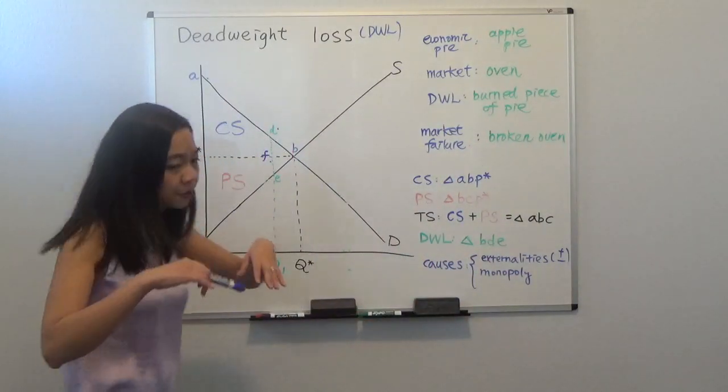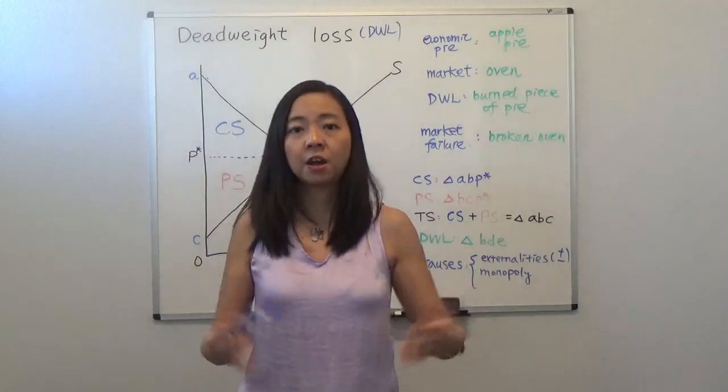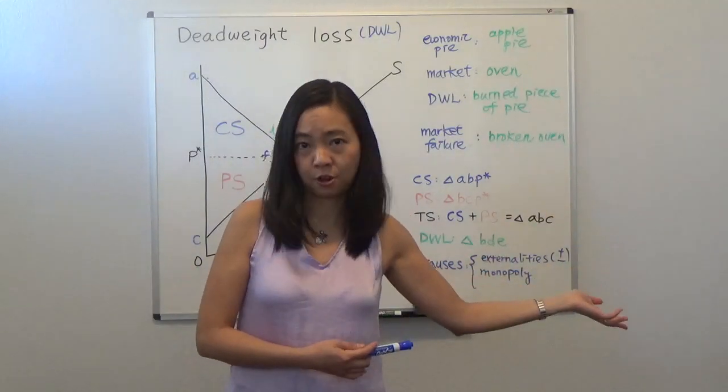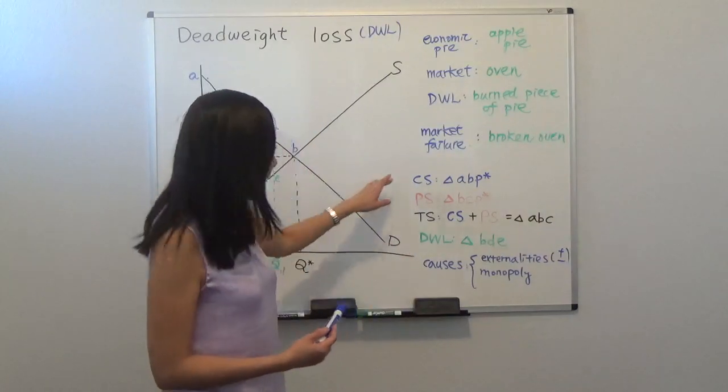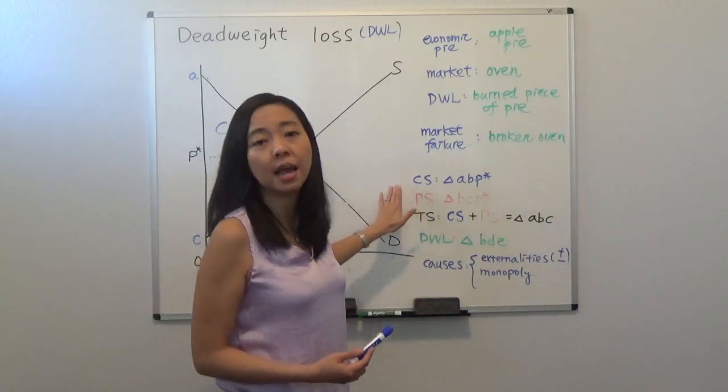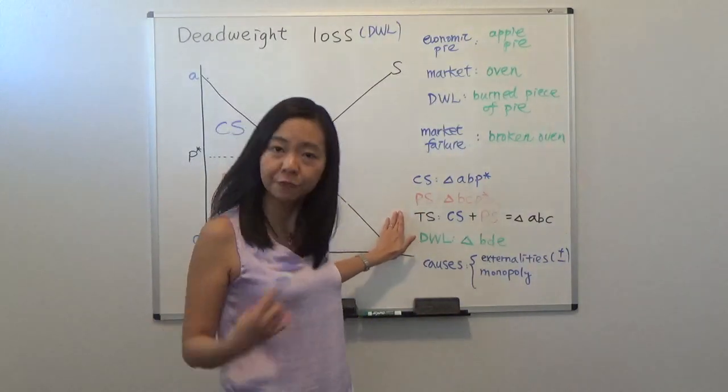So we can see, suppose the market functions well, it's kind of like your oven functions very well. Then in that case, we have many buyers and many sellers. We have perfect competition.